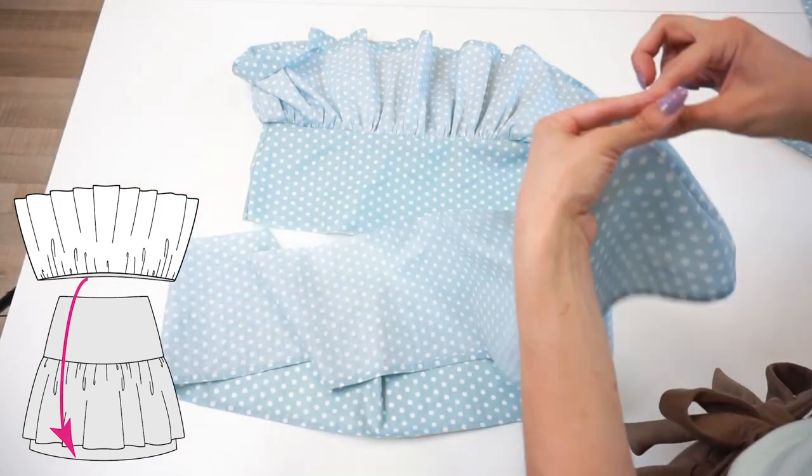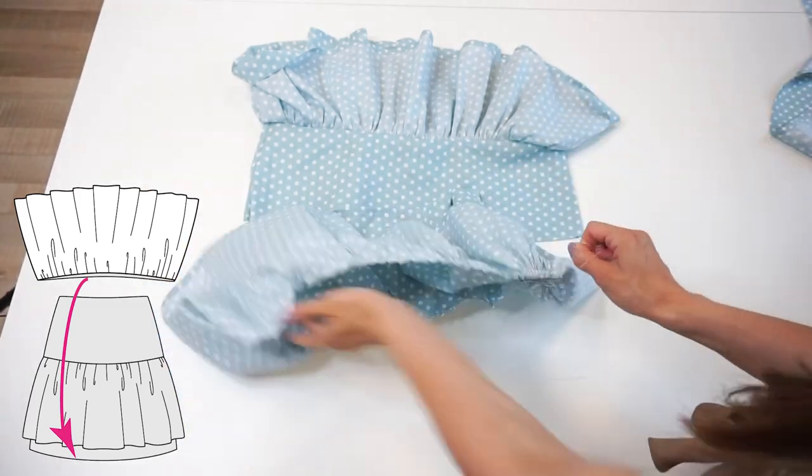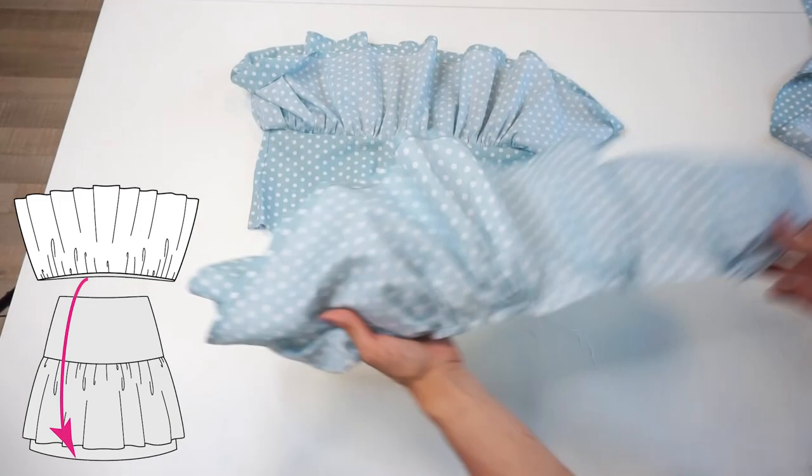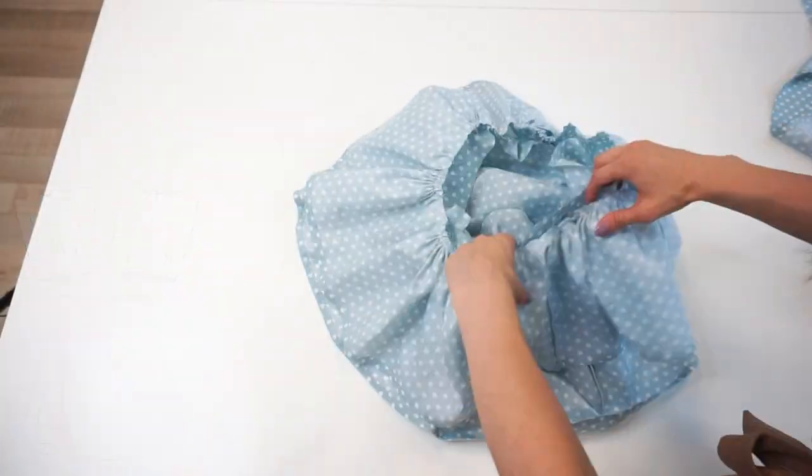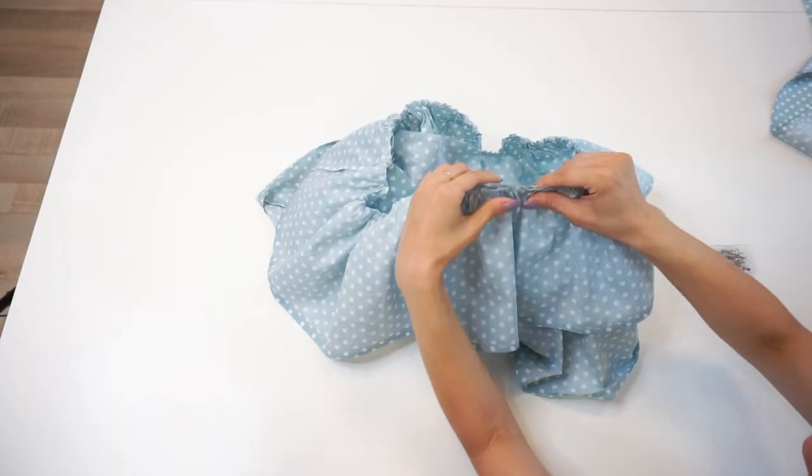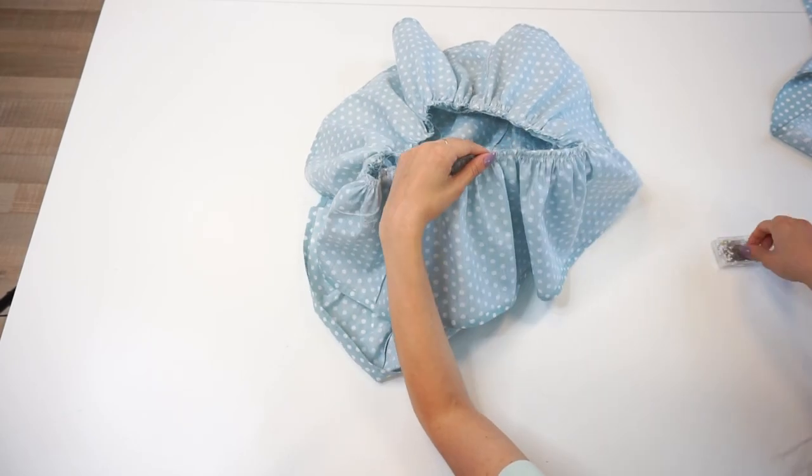But this time I am taking the second frill block and I am gathering it. Then I am matching the right side of the frill to the second skirt panel's right side. Pin at the side seams, at the notches, and adjust the gathering.